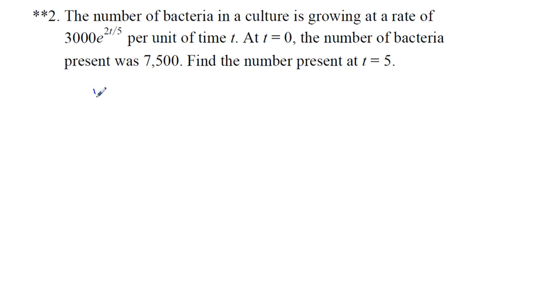So number of bacteria, we'll just call this a y, is equal to 3,000 e to the power of 2t over 5. Except, is that really right? No, because that's going to be rate. So that needs to be different, doesn't it? We need to have this instead of y. We need to write in dy/dt.